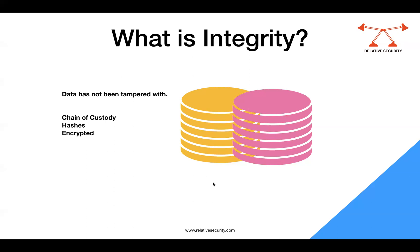To ensure the data has not been changed or tampered with, you make sure that the hash of the data when you collect it and when you deliver it — or when you start the forensic analysis — has to be the same. That is the main thing: the hash has to be the same, and that is what ensures the integrity of any data.